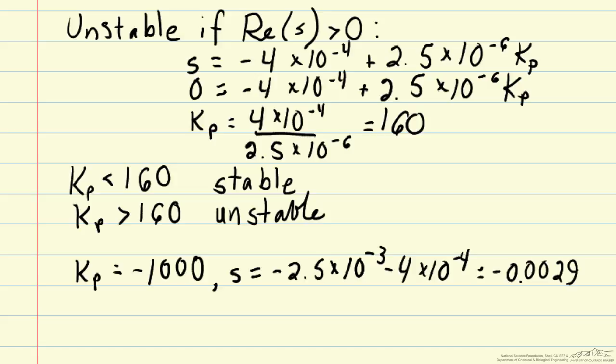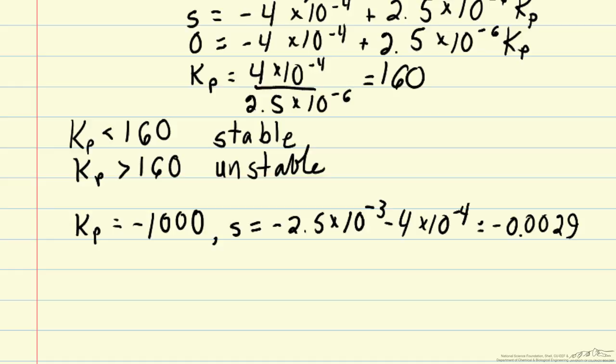One way that we can consider the effect of kp on our closed loop system is to make what's called a root locus plot. We just calculated the root of the closed loop transfer function by solving the characteristic equation. The root locus plot allows us to visualize how the roots of the system change as we change the gain.